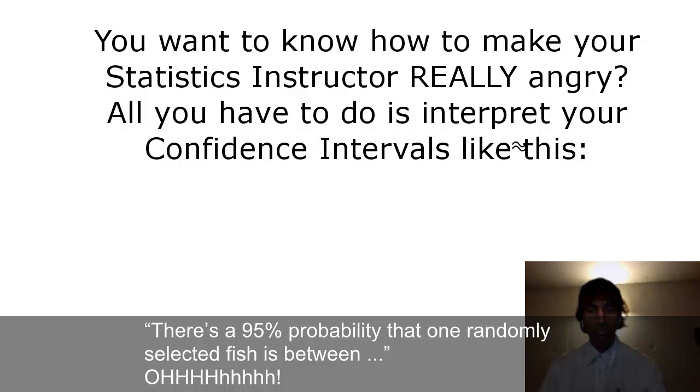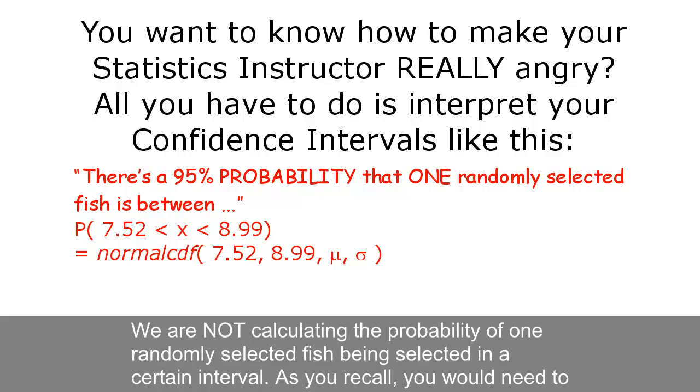There's a 95% probability that one randomly selected fish is between... Oh! We are not calculating the probability of one randomly selected fish being in a certain interval.